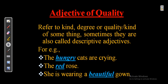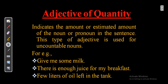Adjective of quality gives you the description of a person, place, or thing. For example: 'The hungry cats are crying' — 'hungry' gives the quality of the cat. 'The red rose' — the rose is red. 'She is wearing a beautiful gown' — this gives the quality of a thing. These are examples of adjective of quality.